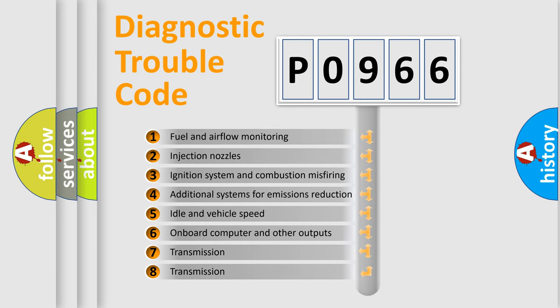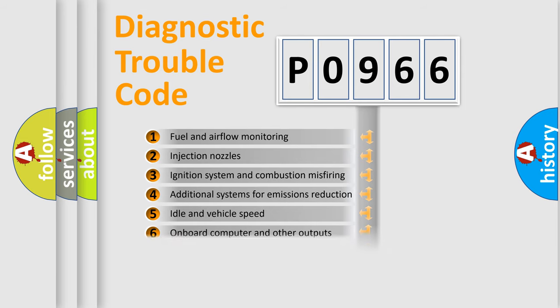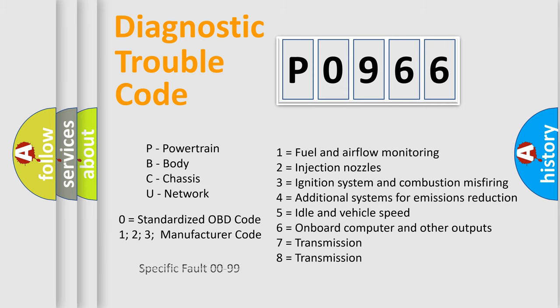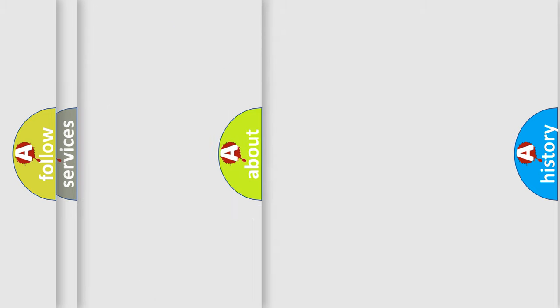The third character specifies a subset of errors. The distribution shown is valid only for the standardized DTC code. Only the last two characters define the specific fault of the group. Let's not forget that such a division is valid only if the second character code is expressed by the number zero.